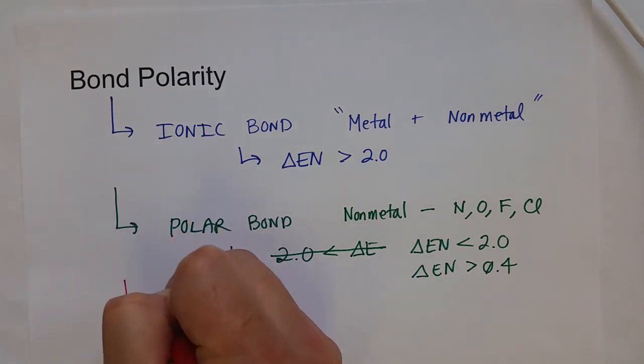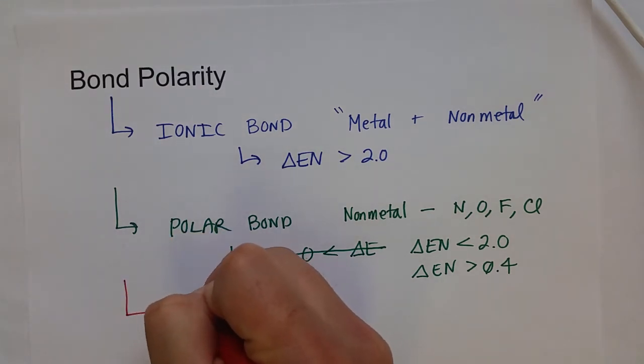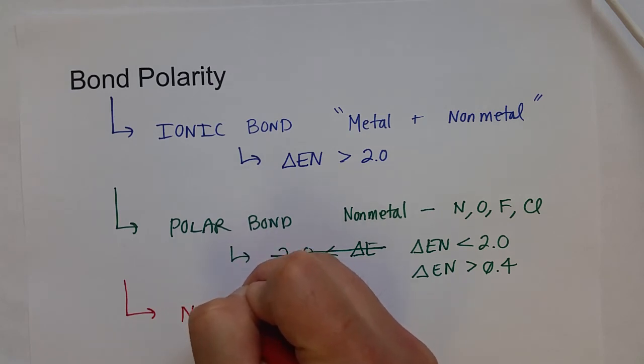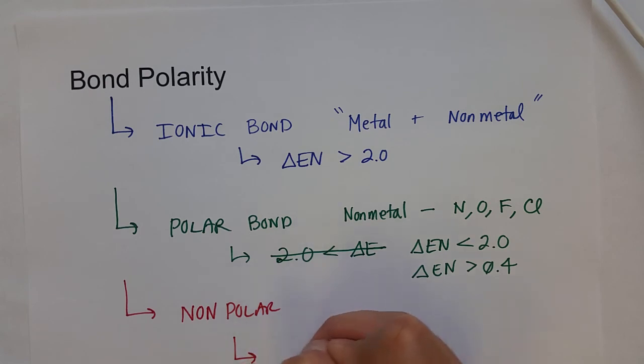And then, of course, we could have nonpolar bonds. And this is when the change in electronegativity, or the difference in electronegativity between the two atoms, is 0.4 or less. Less than or equal to 0.4.